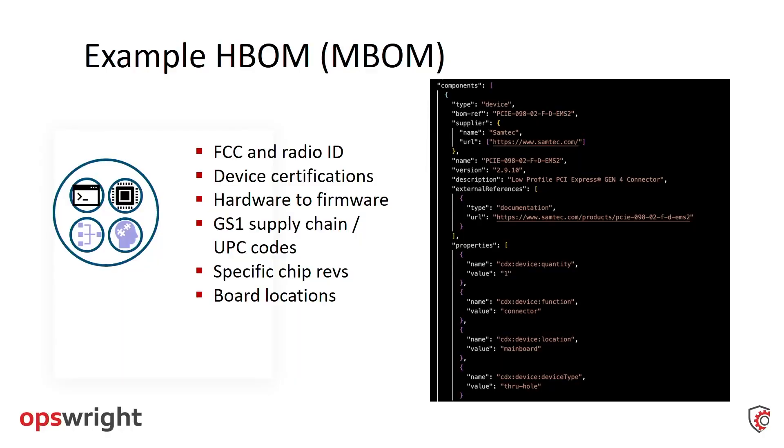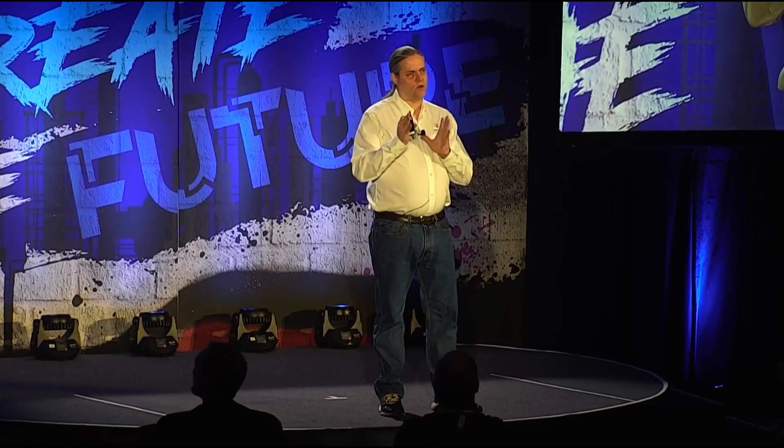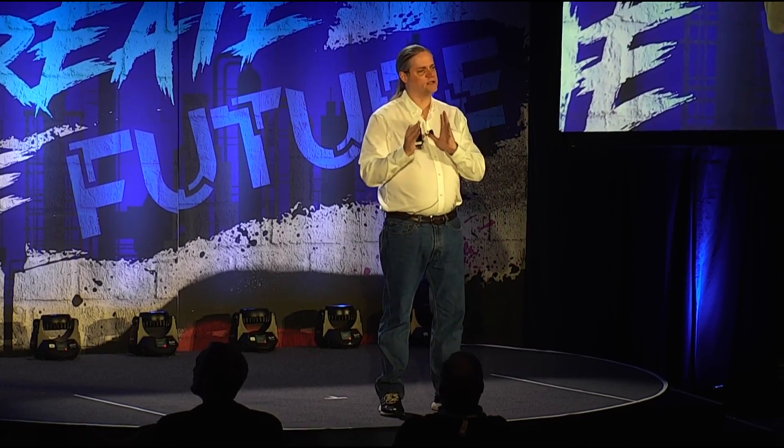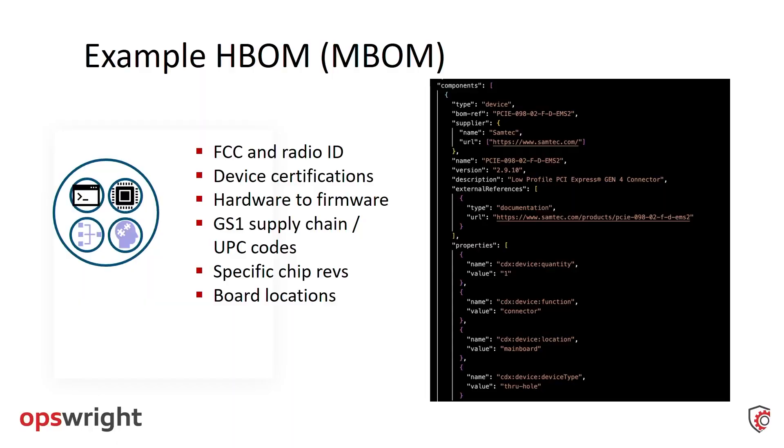From a hardware bill of materials standpoint, here's an example as defined in the CycloneDX specification. On its own, looking at the hardware, we can examine physical characteristics. With an FCC ID from the hardware BOM, I can look it up on the FCC website and through a documentation-based exercise identify likely characteristics. I can get frequency information I might use in an SDR-style attack. I haven't even touched the software yet — I just got hardware information I can use to facilitate an attack with open-source intelligence mechanisms.